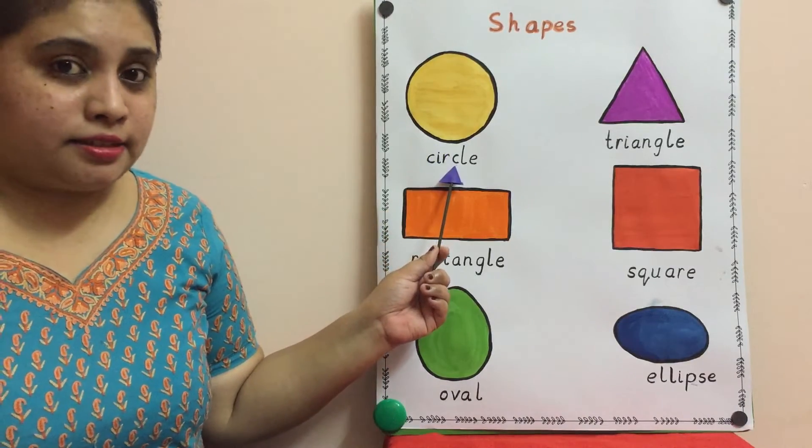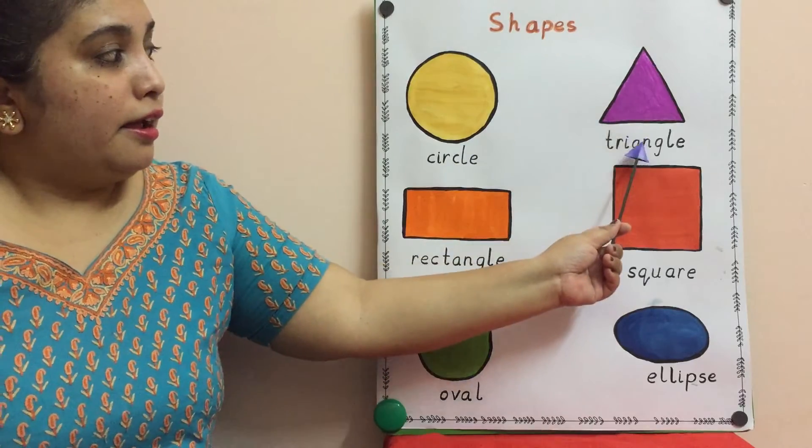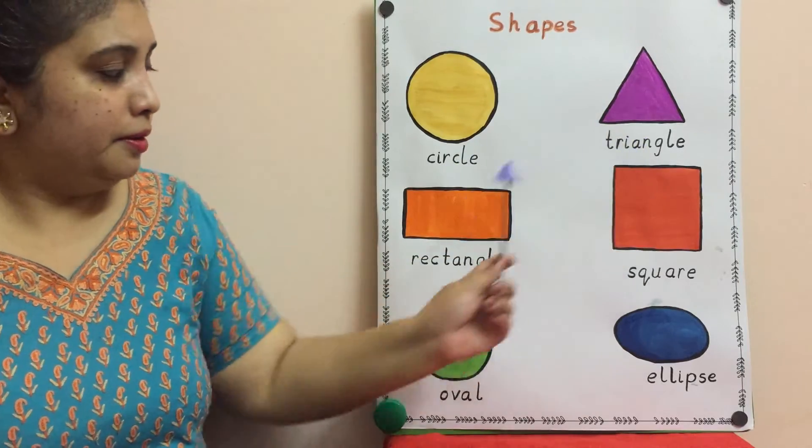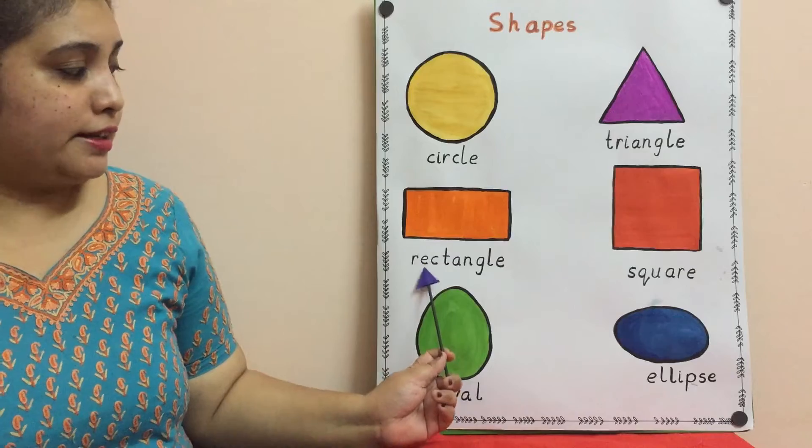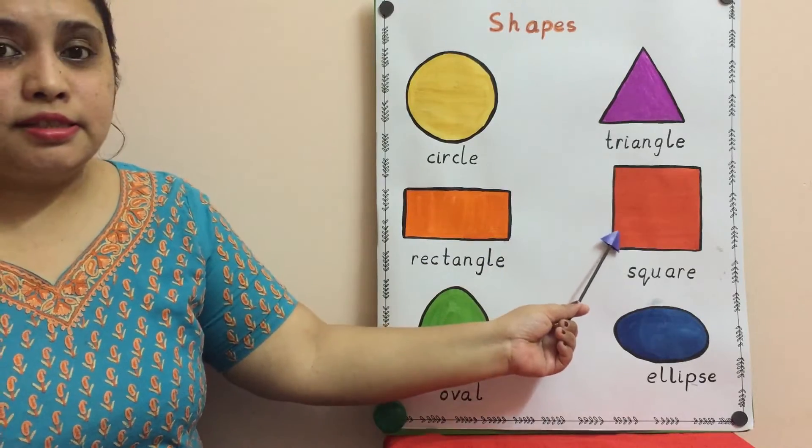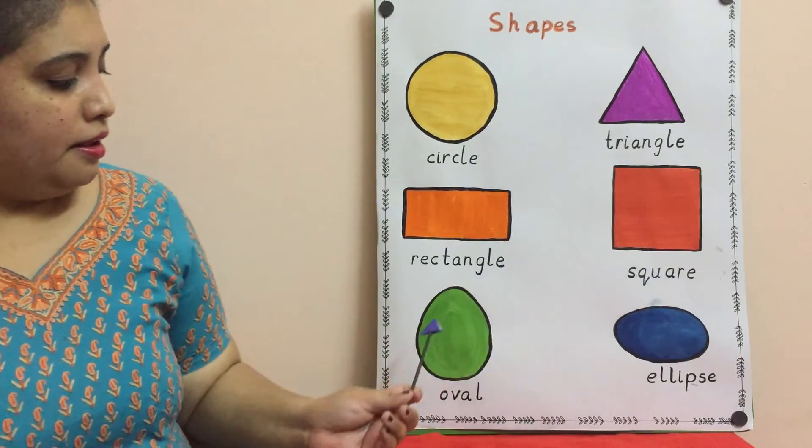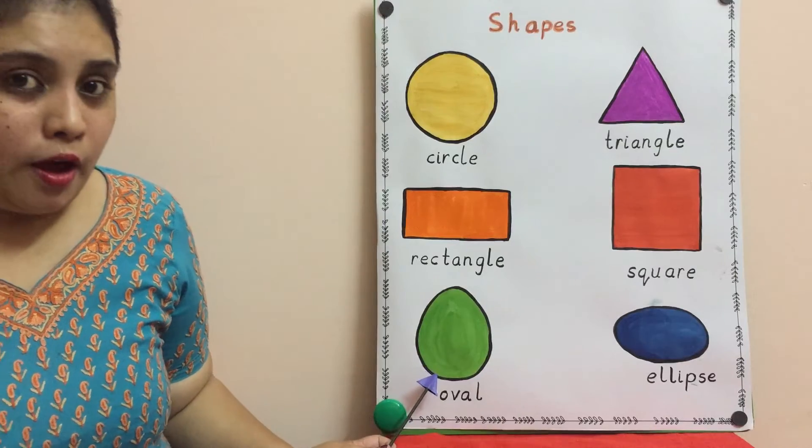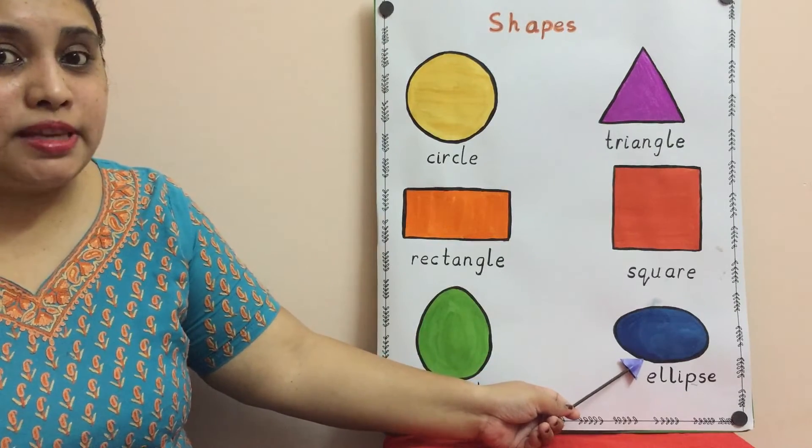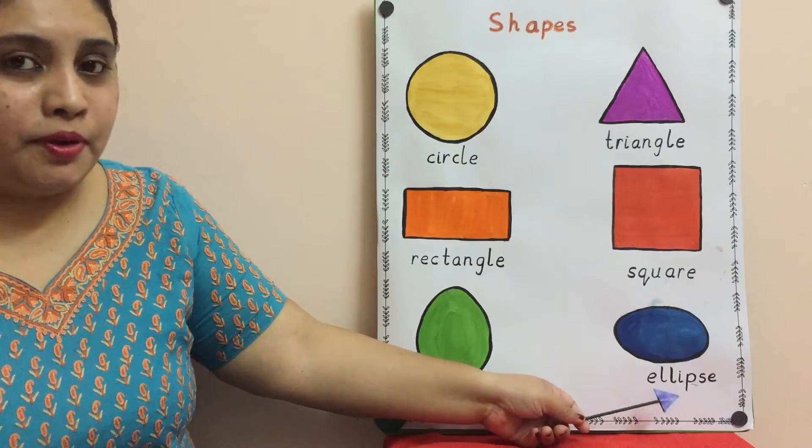This is circle, this is triangle, this is rectangle, this is square, this shape is an oval, this shape is an ellipse.